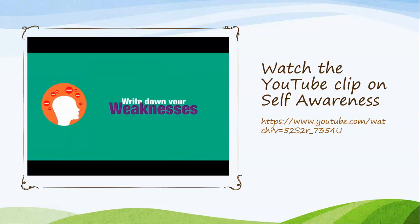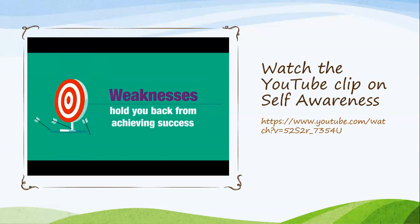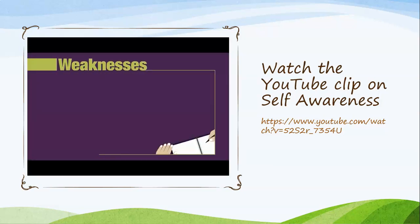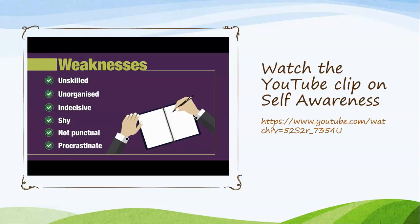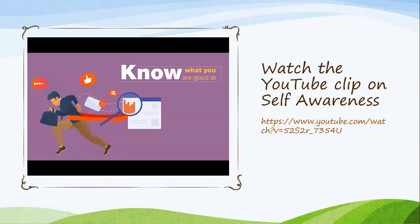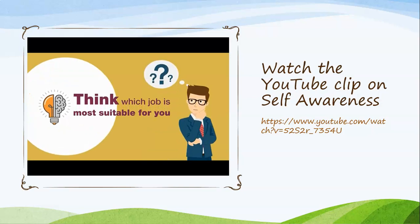Now write down your weaknesses. Weaknesses refer to the traits you lack or the ones you need to improve. These hold you back from achieving success, but they can be improved if you want. Your weakness can be anything from professional to personal — for example, you may lack computer skills, be unorganised, find it difficult to make decisions, be shy around new people, not be punctual, or maybe you procrastinate, which means you leave important tasks for the last minute. Being aware of your strengths and weaknesses is especially important if you are looking at potential career options, as knowing what you are good at can help you decide which jobs are suitable for you.